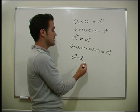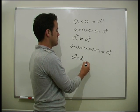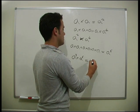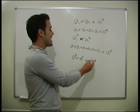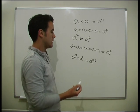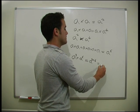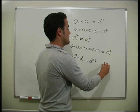So a to the three times a to the six, that just equals a to the three plus six. We just add the powers together, so it just equals a to the nine.